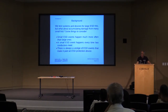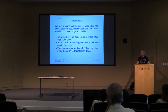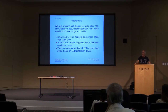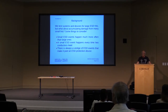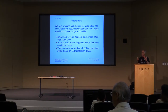Every time you touch something you get an ESD event — you just can't feel it below about 2,000-3,000 volts. You might get a 50, 100, or 500 volt event every time you touch something. If you have a system with moving parts, they generate their own events. Every time two conductors meet, there's some little discharge.